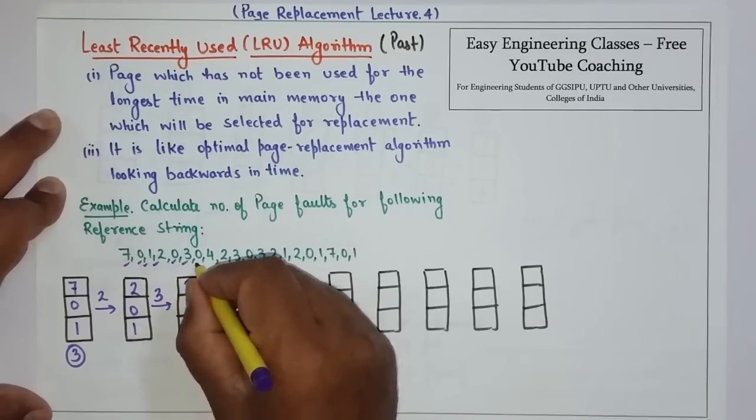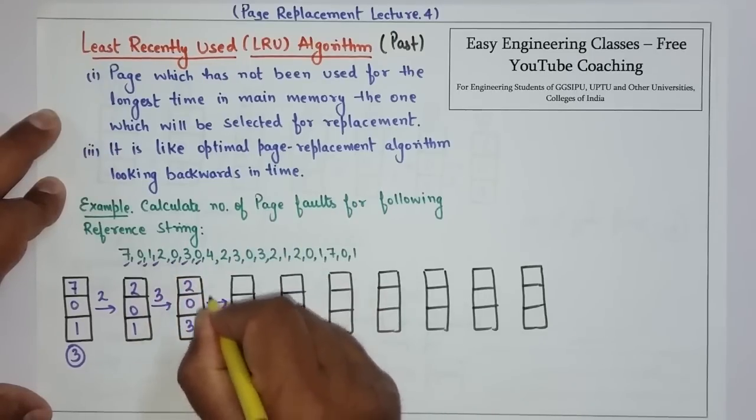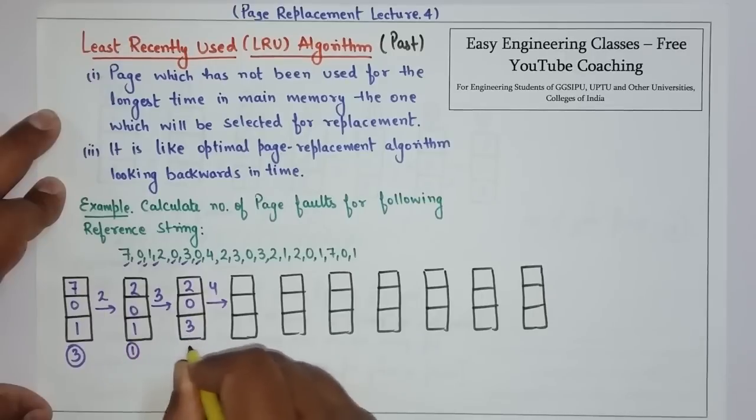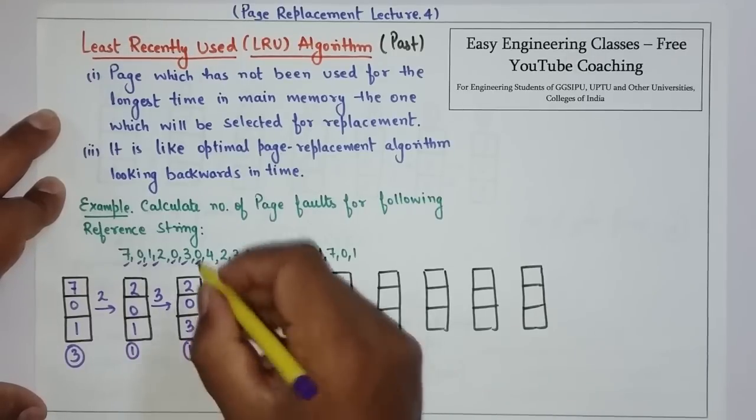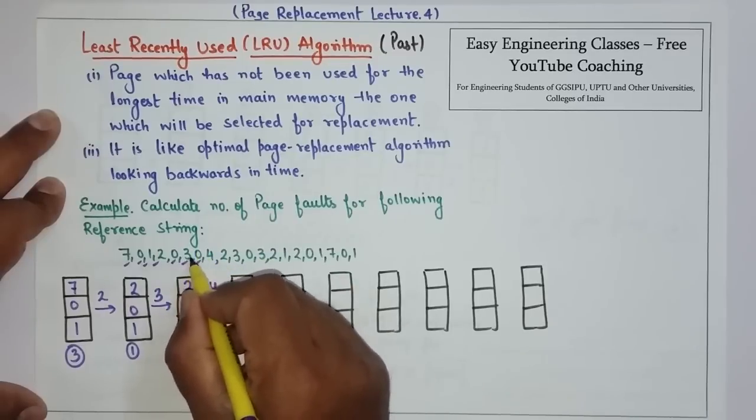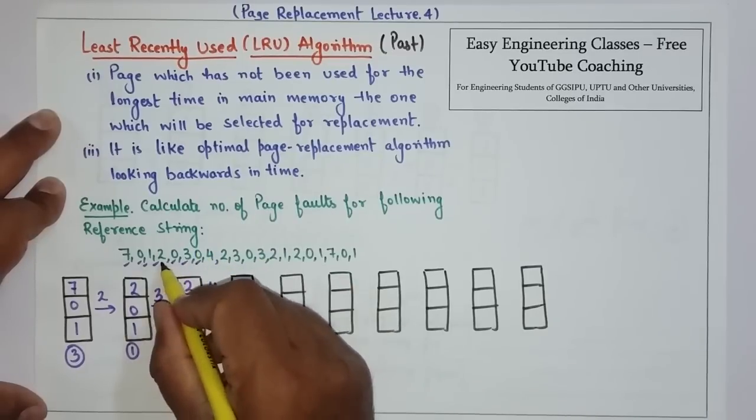Then, 0, 0 is there. So, no page fault. It means 4. Now, we have to see and choose. 2, 0, 3 are used. 2 is used. Then, 2 is used as well.